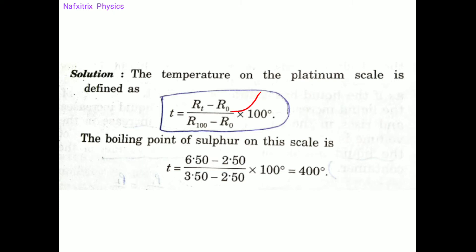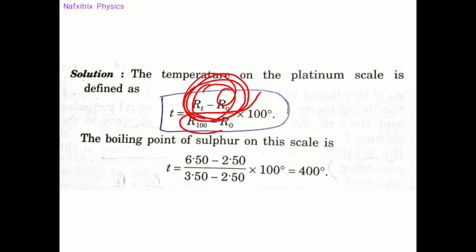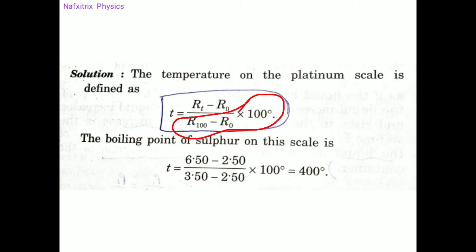The term (R_T − R_0) represents the resistance change from the ice point to the temperature we want to measure. Combined with the scaling factor, this tells us the temperature corresponding to that resistance change.